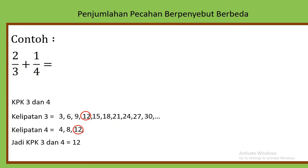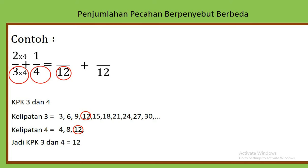Selanjutnya, setelah dijadikan penyebutnya sama-sama 12, anak-anak tinggal mengalikan: 3 kali berapa supaya menjadi 12? Yaitu 3 kali 4. Kalau penyebutnya dikali 4, otomatis pembilangnya juga dikalikan 4. Selanjutnya, 4 kali berapa supaya menjadi 12? Kita kalikan 3. Kemudian 1 kali 3, hasilnya siap diletakkan.